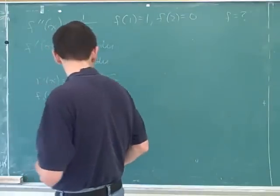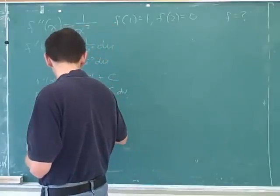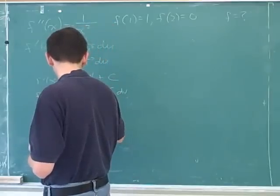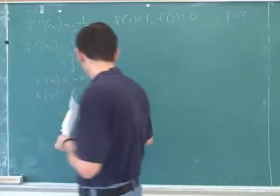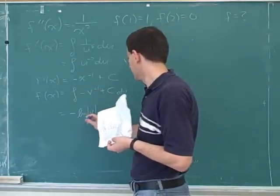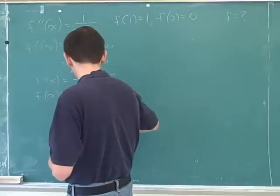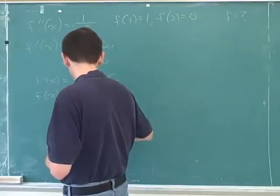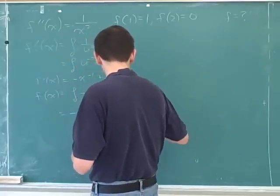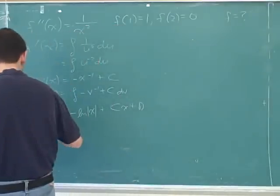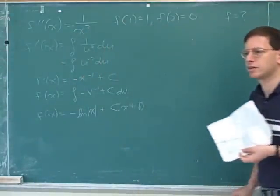It's better not to use the same symbol inside the derivative and outside. And this anti-derivative is a special one — a natural log. Now we're outside the derivative, so I'll go back to x. So here's what I get for f.